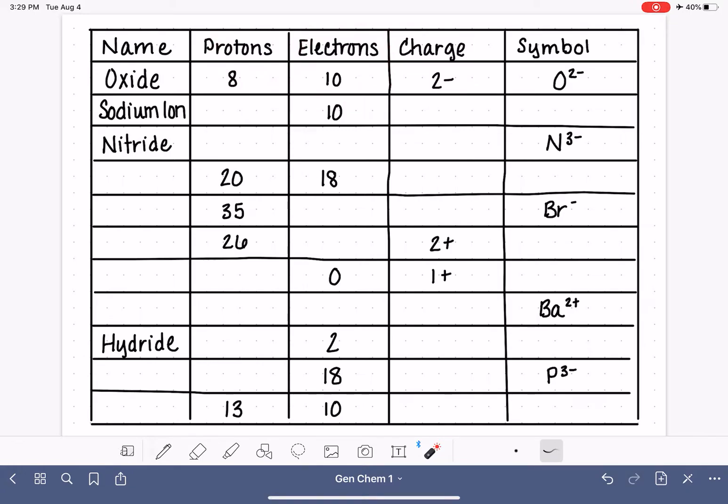Before we get started on this video, I want to remind you of a couple of things that I have gone over in previous videos. First of all, the name of an ion depends on whether that ion is positively charged or negatively charged. When we have a positively charged ion, like this guy right here, its name is almost identical to the name of the atom. We just add the word ion at the end.